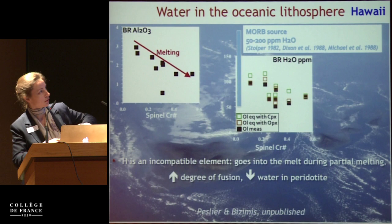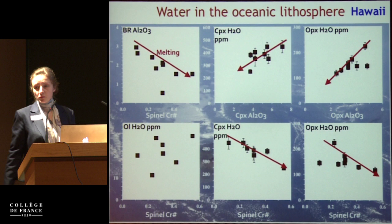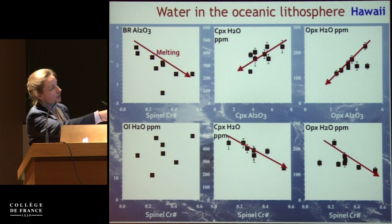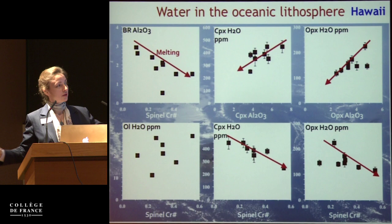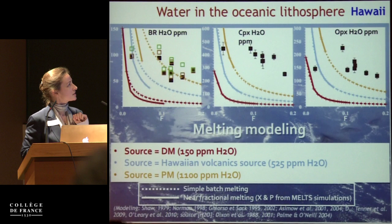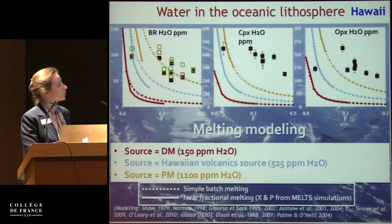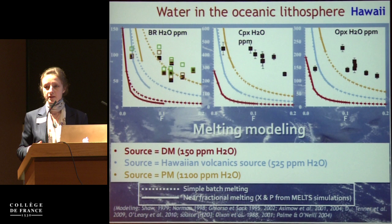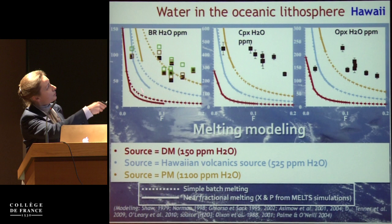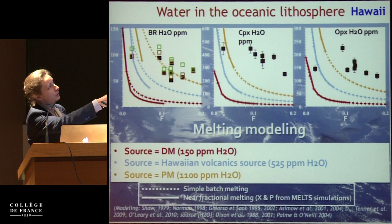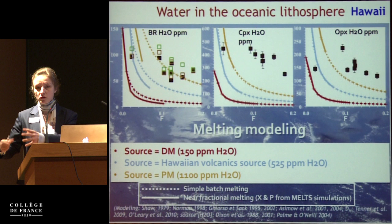Does water correlate with indices of melting? The water content of pyroxenes does show a correlation. However, when we try to model this by taking a reasonable mantle source — for example the depleted mantle containing about 115 ppm water — and applying melting models, all the melting curves fall systematically below our data. That means there is too much water in these Hawaiian peridotites to be explained simply by melting.